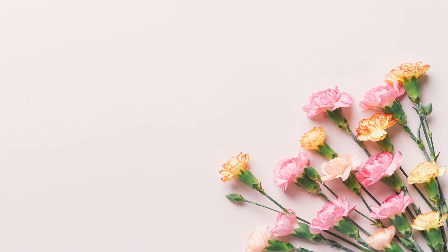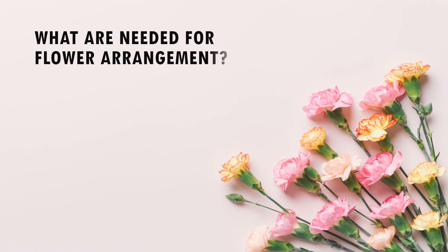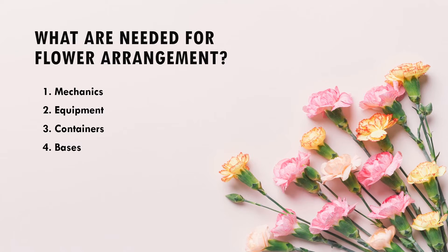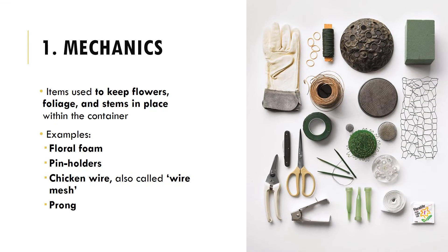What are the things needed for flower arrangement? First are the mechanics. Second, the equipment. Third, the containers. Fourth, the bases. Fifth, support. Sixth, plant material. Seventh, the accessories. The mechanics are items used to keep flowers, foliage, and stems in place within the container.